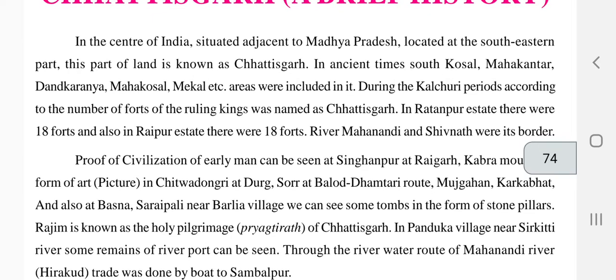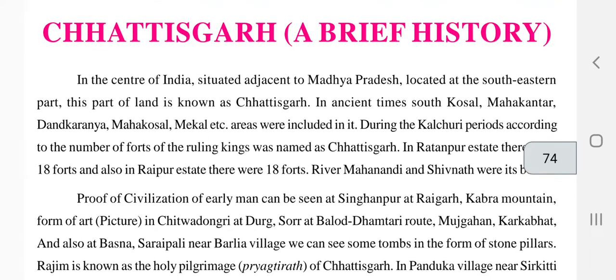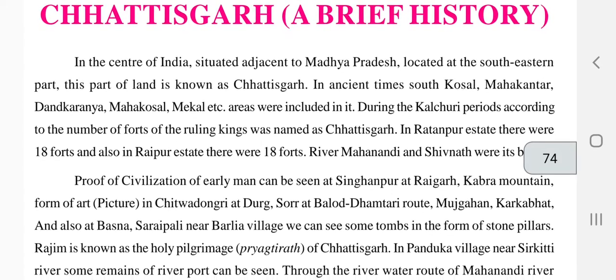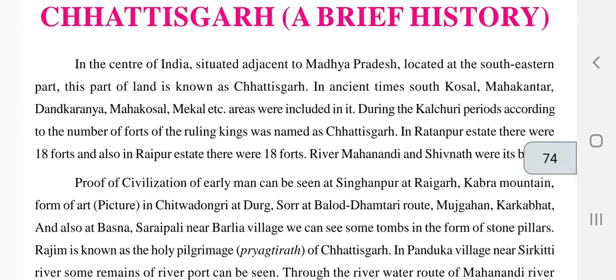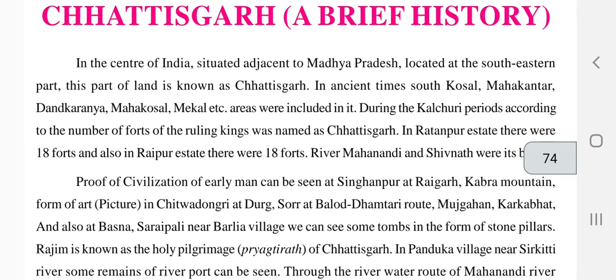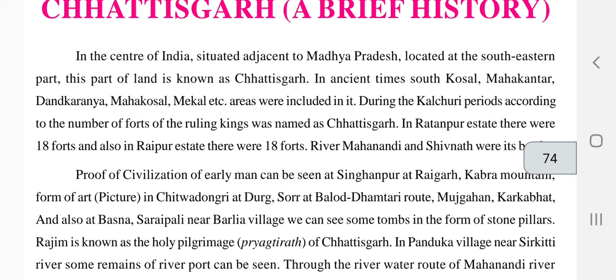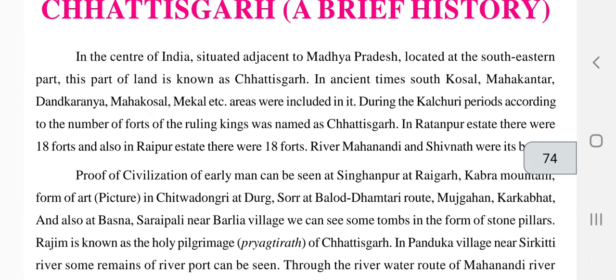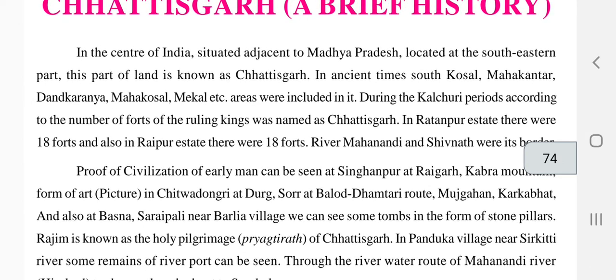Chhattisgarh is situated in the center of India, adjacent to Madhya Pradesh, located in the southeastern part. In ancient times, South Koshal, Mahakantar, Dandkarnya, Mahakoshal, Meghal, etc. — these areas were included in what is now Chhattisgarh.